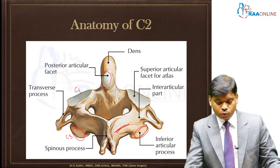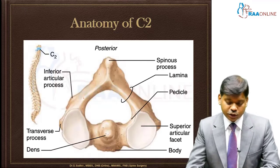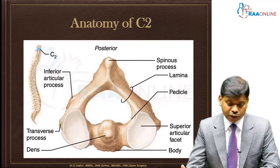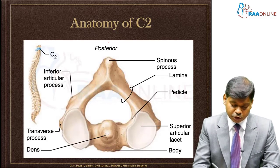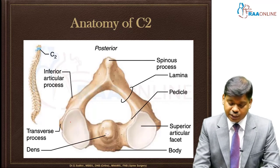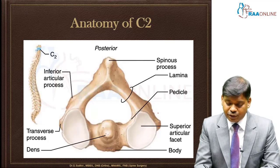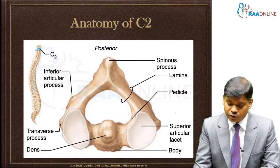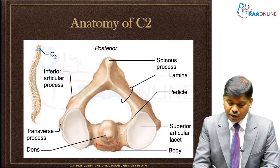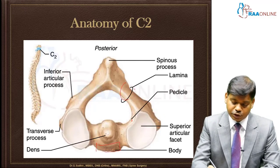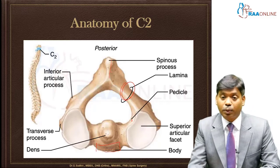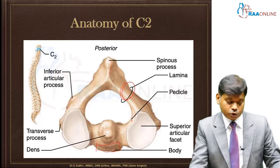This is very very important. This is a cross-sectional view of C2 — this is anterior, this is posterior, this is the dens, this is the transverse process which is very rudimentary, this is the pedicle, this is the superior articular process, this is the body, this portion is the lamina, and this is the spinous process.